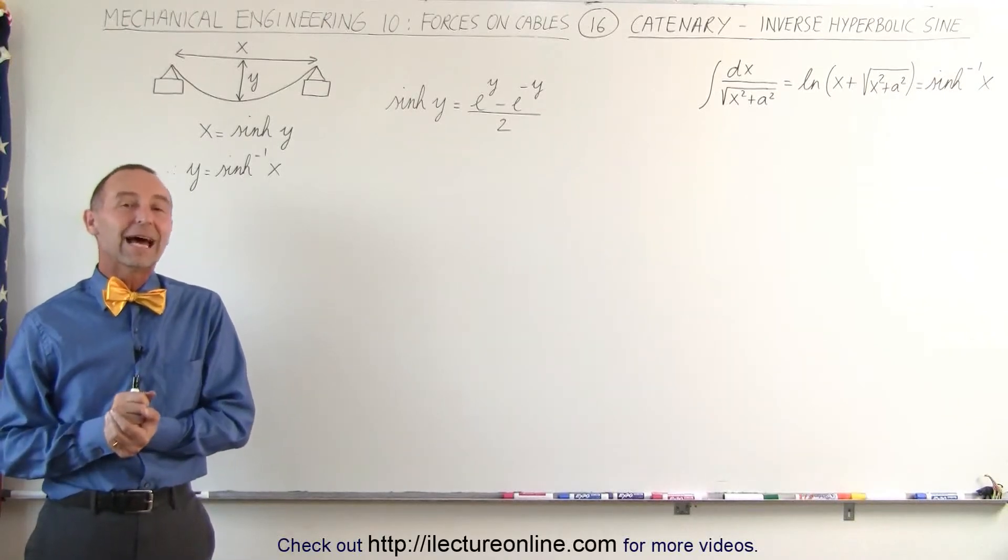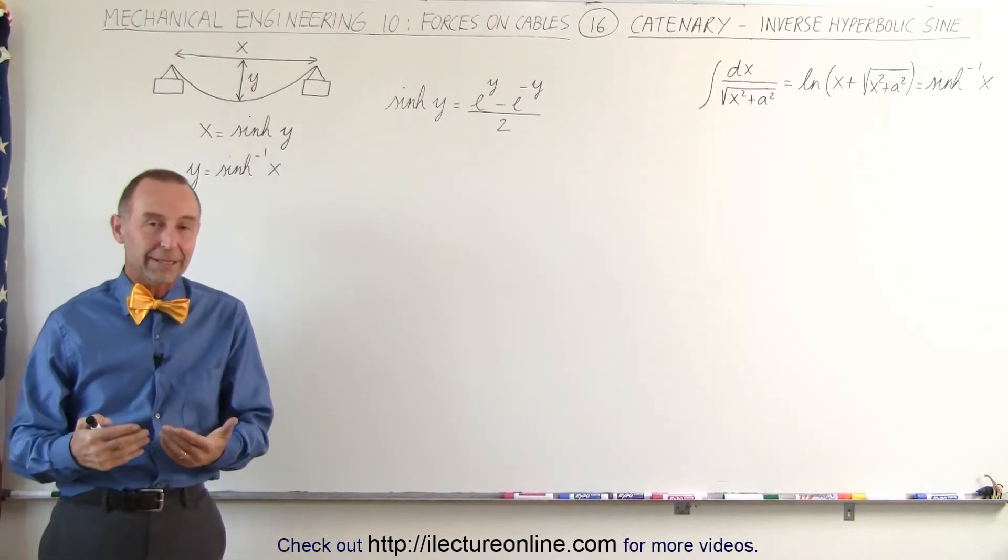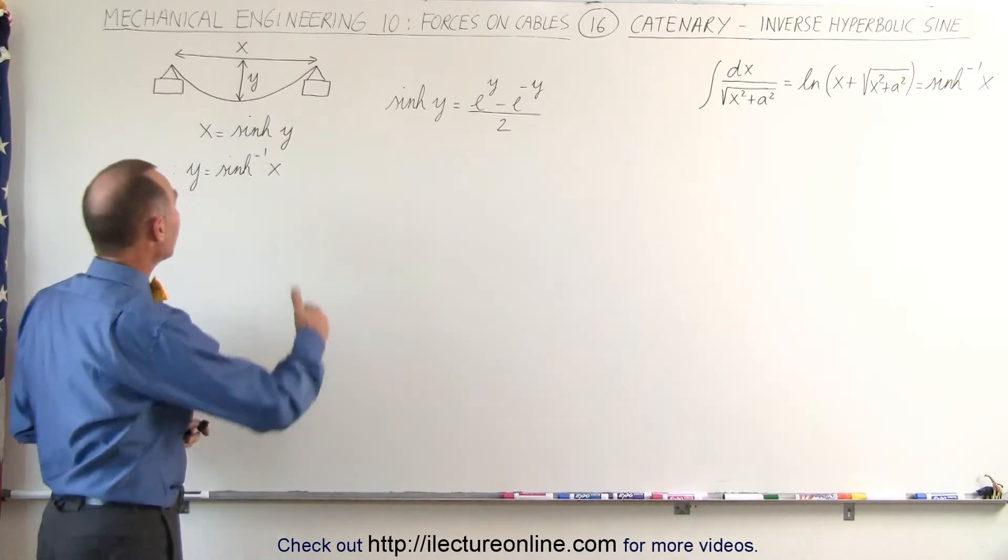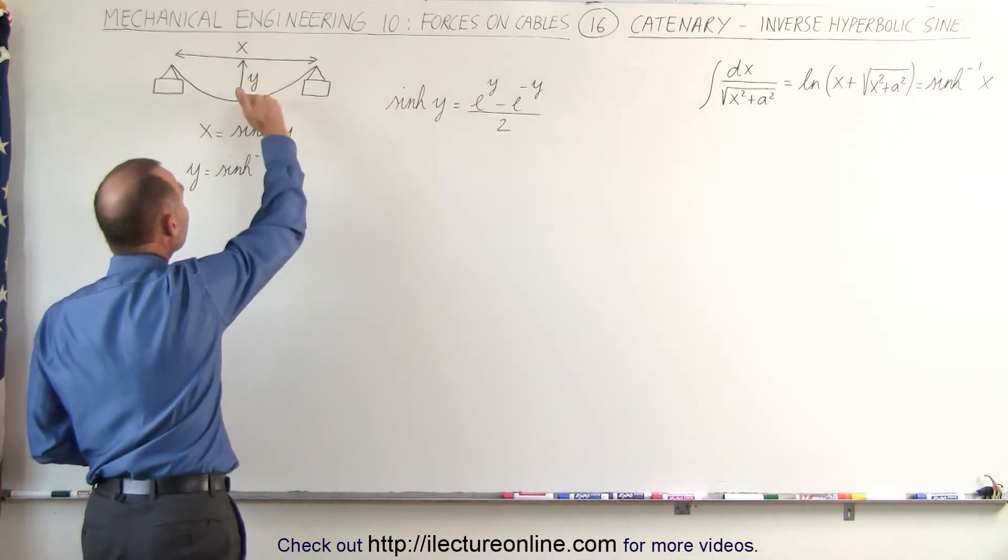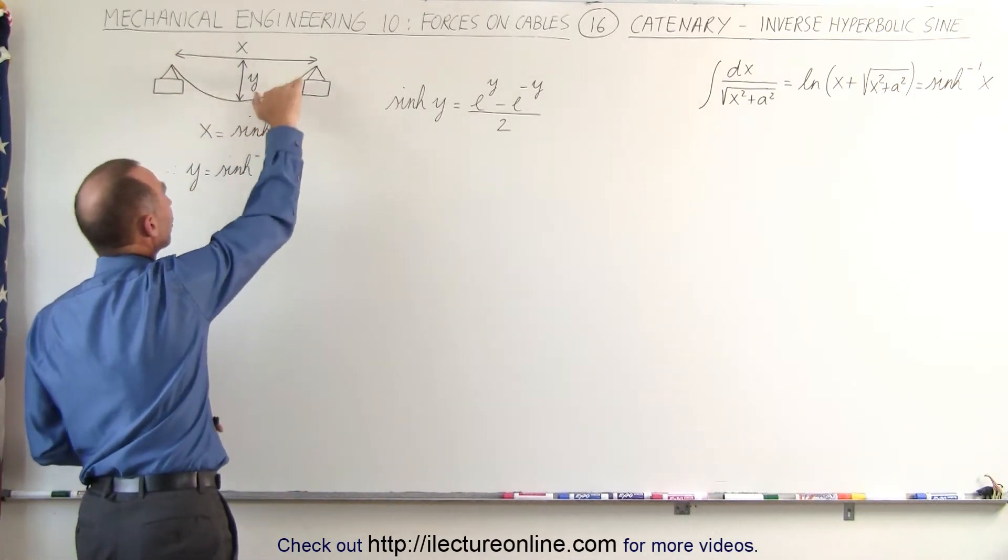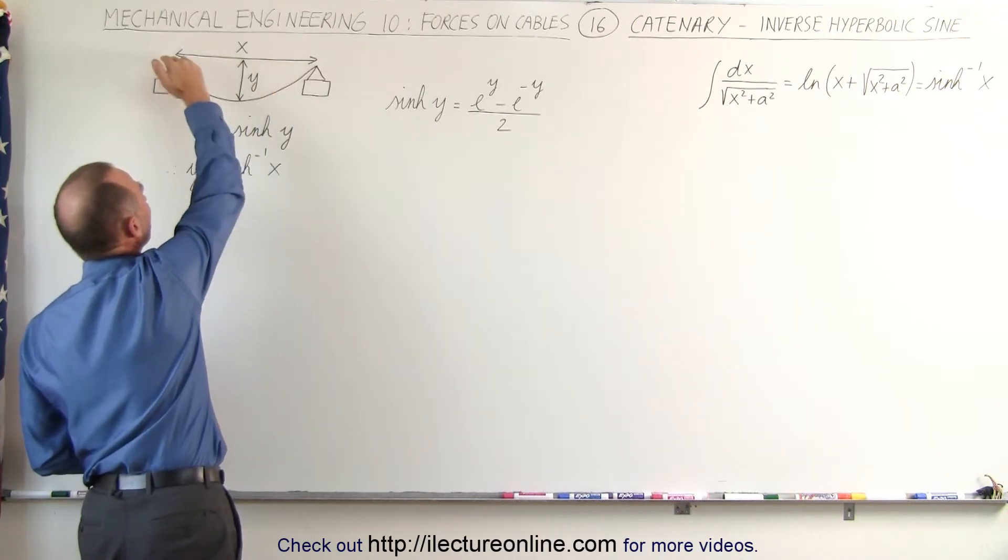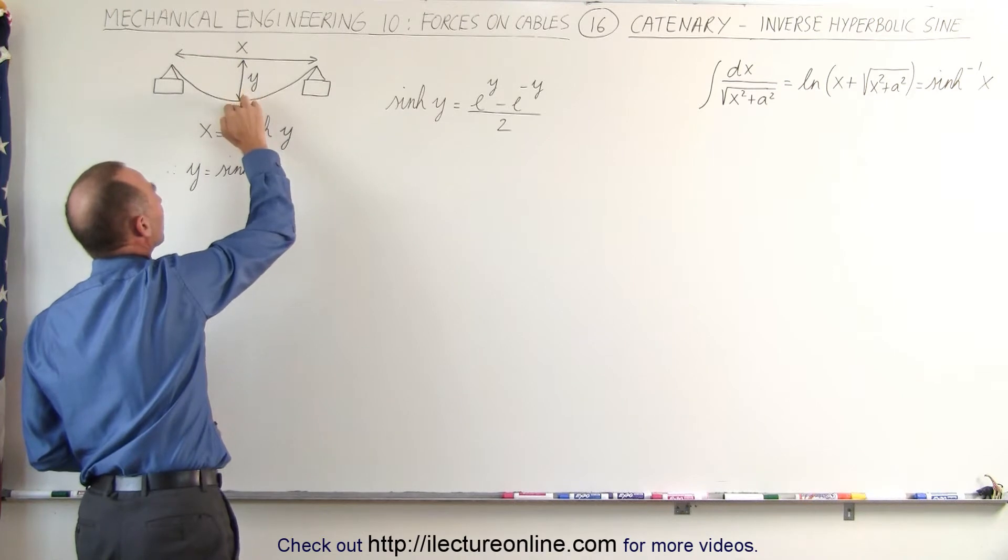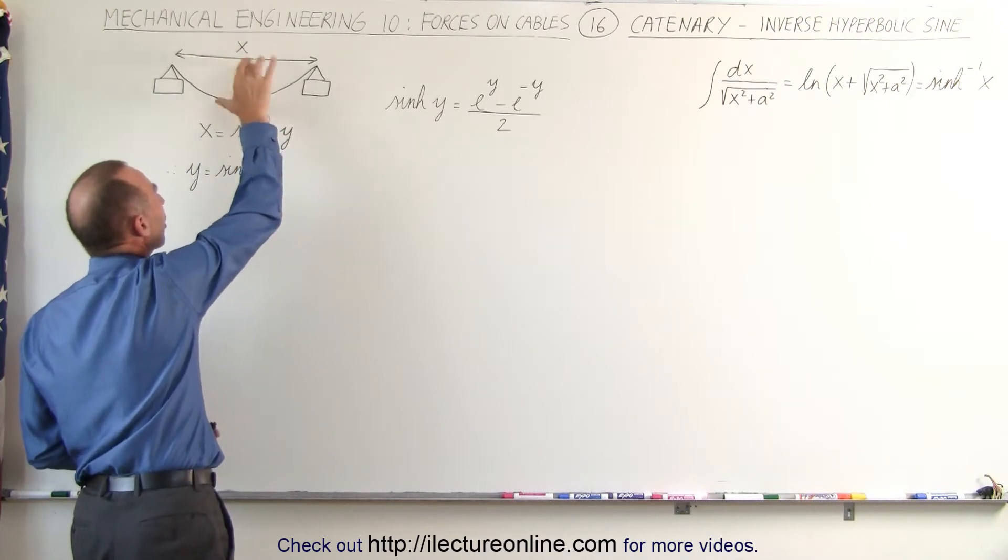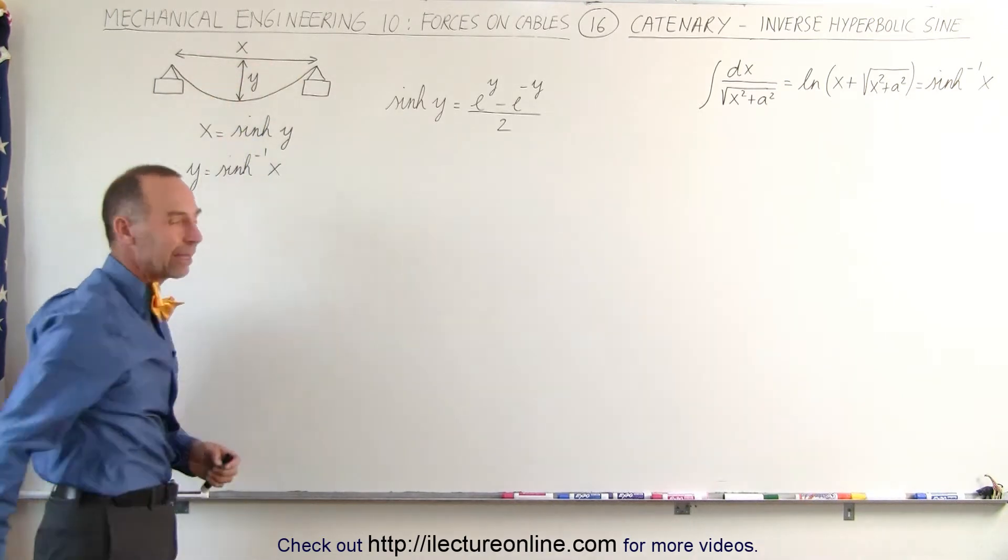Welcome to ElectronLine. Now we'll start looking at the catenary. The catenary is a cable that hangs under its own weight and typically has a fairly large sag. In other words, the distance from the horizontal positions where it's attached to the lowest point on the cable, Y, is fairly large relative to the span X.